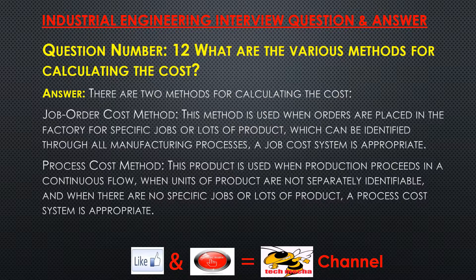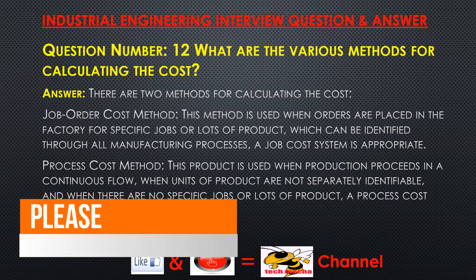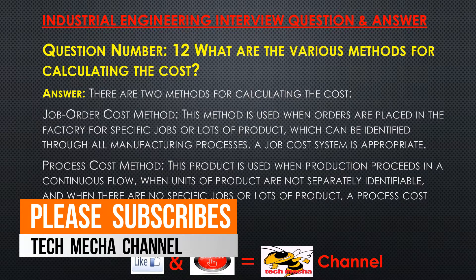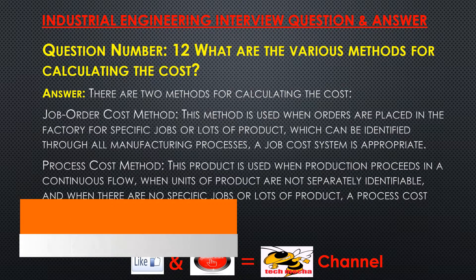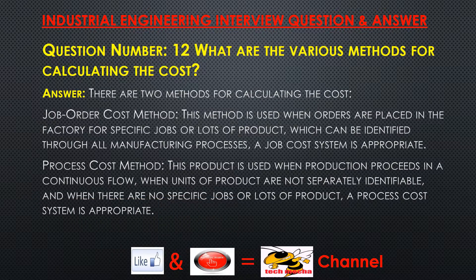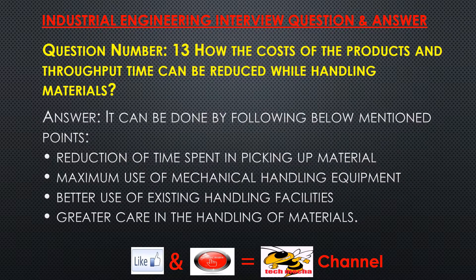Process cost method: This method is used when production proceeds in a continuous flow, when units of product are not separately identifiable, and when there are no specific jobs or lots of product — a process cost system is appropriate.